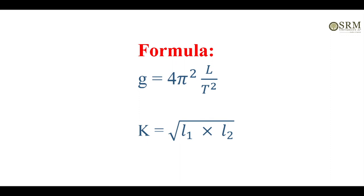Where did we get the formula? We know the time period of a simple pendulum: T is equal to 2 pi square root of L by G. Squaring on both sides, we get G is equal to 4 pi square into L by T square. Here, 4 and pi (22 by 7) are known; L means length.